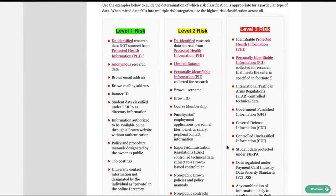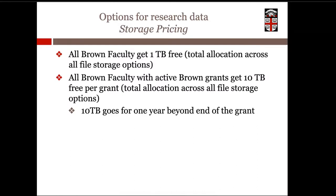There are security requirements that go along with each risk level. Before jumping into storage and compute options for different risk levels, I want to briefly mention some pricing benefits. All Brown faculty get one terabyte of free data just by being a faculty member, and that goes across storage options in total — counting data in LRS, Isilon, and our data stronghold. On top of that, if you have an active Brown grant, you get 10 terabytes in total across all those different storage options. So if you're a PI with five grants, you have 51 terabytes of data for free.